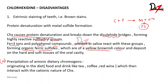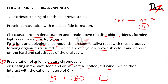The fourth reason for staining is that chlorhexidine is cationic in nature — it is a positively charged molecule. Certain anionic dietary chromogens such as tea, coffee, and red wine are negatively charged. When chlorhexidine interacts with these negatively charged food chromogens and adheres to the tooth, it imparts the color of these chromogens — the color of tea, coffee, or red wine — onto the tooth surface.